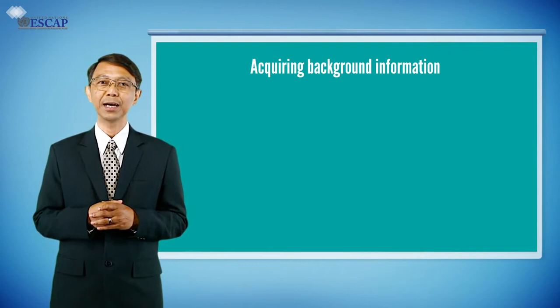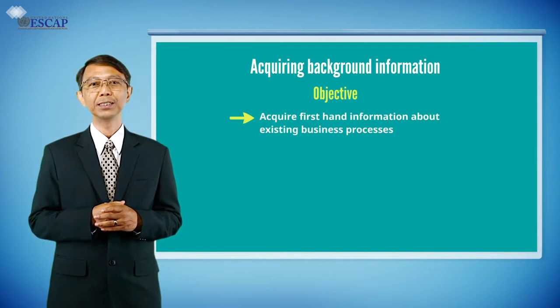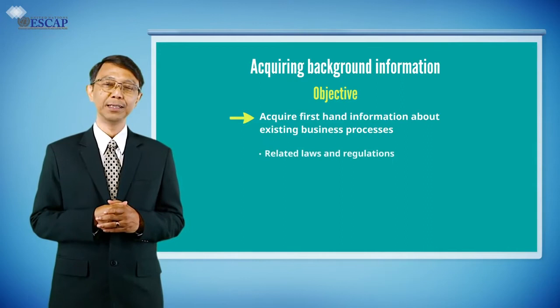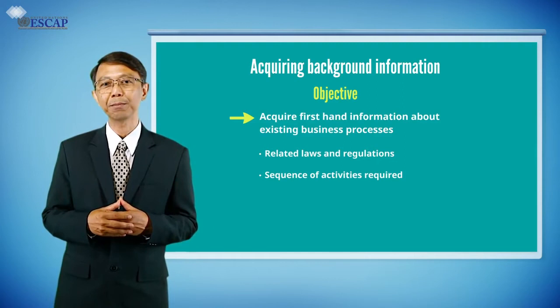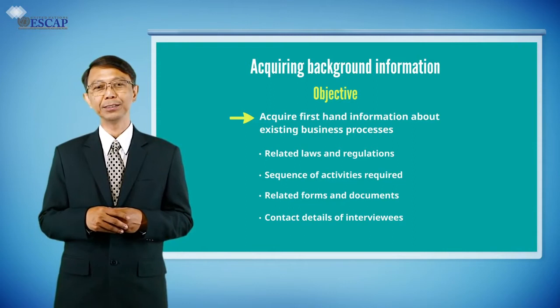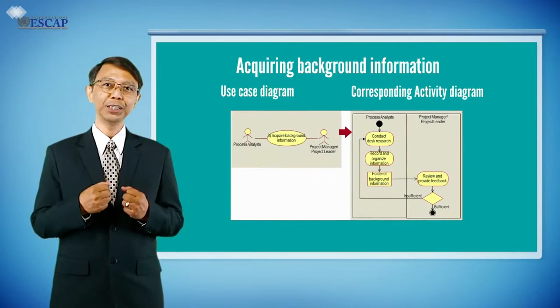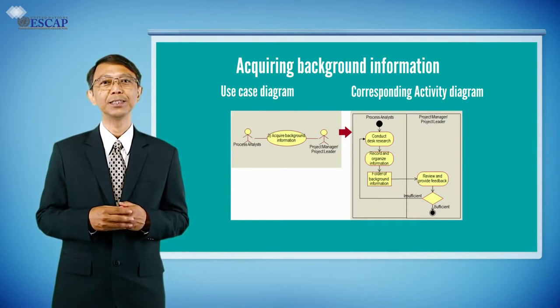The objective of this step is to acquire as much first-hand information as possible about existing business processes in the scope of our analysis, including information about related laws and regulations, sequence of activities required to complete each business process, related forms and documents, and contact details of potential interviewees for further investigation. Process analysts of the BPA project team need to work with management support from the project manager to conduct this research from several available sources.